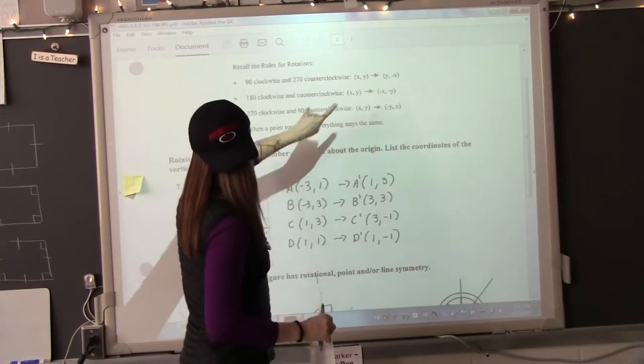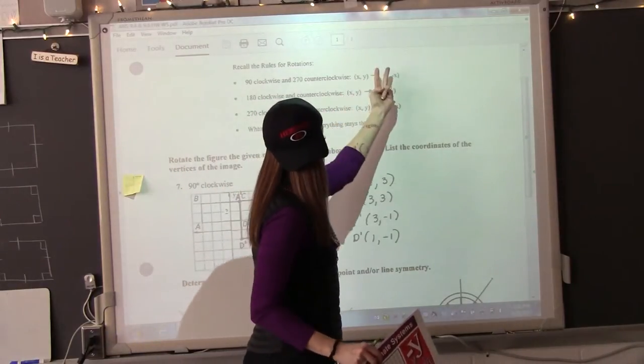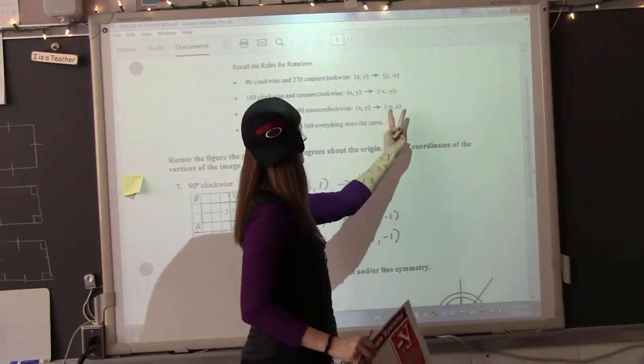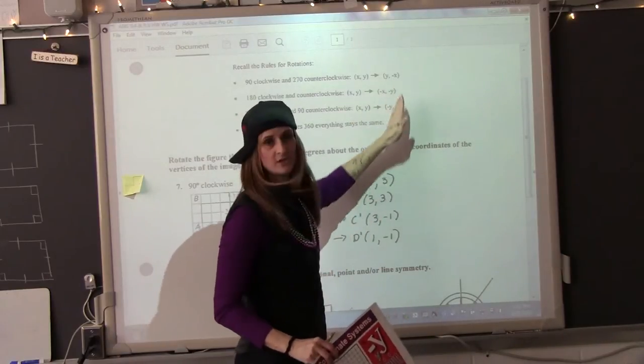Back to the rules. You notice in this rule, x, y becomes y, x. And this rule, x, y becomes y, x. We haven't addressed the signs yet. The signs are easy because we already know how to do the signs. So all we have to do for 90 degrees is, depending on which way we're going.